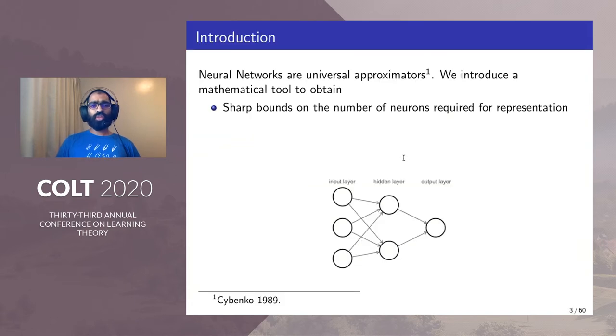We all know that neural networks are powerful universal approximators. They can approximate high-dimensional complex functions very easily. We introduced a mathematical tool to obtain sharp bounds on the number of neurons required for representation.